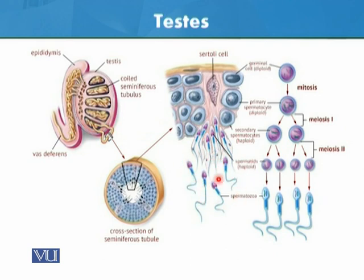In sperms, there are half the number of chromosomes. If we look at this diagram, the peripheral portion of the cells are mitotically divided. But after that, at a specific stage, meiosis starts.